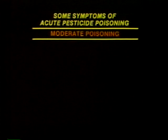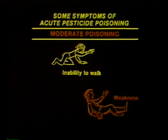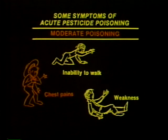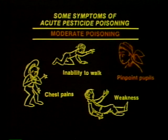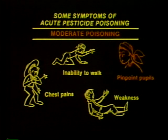Moderate poisoning symptoms include inability to walk, weakness, chest pains, and pinpoint pupils. This symptom is especially significant because while many of the symptoms mentioned could be symptoms of other illnesses, pinpoint pupils are usually specific to pesticide poisoning.